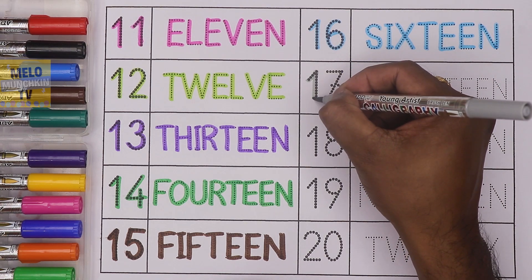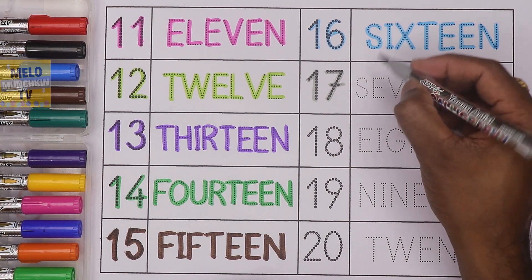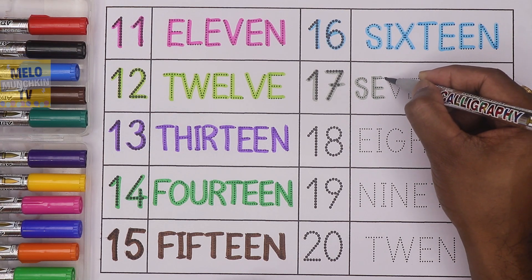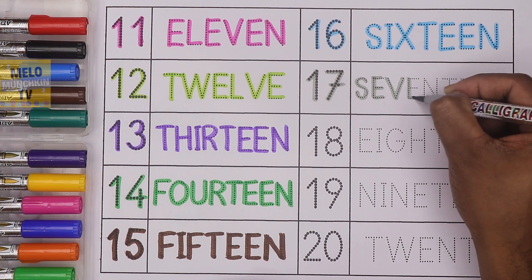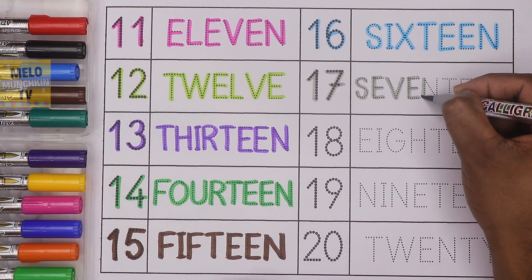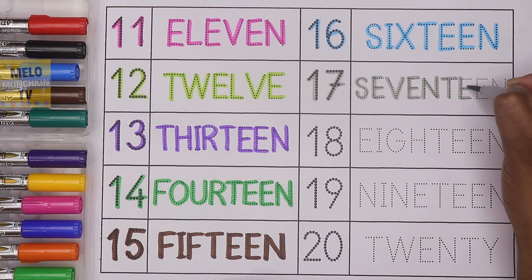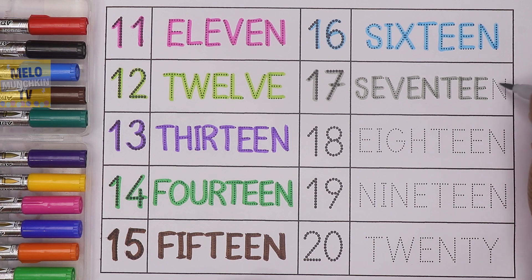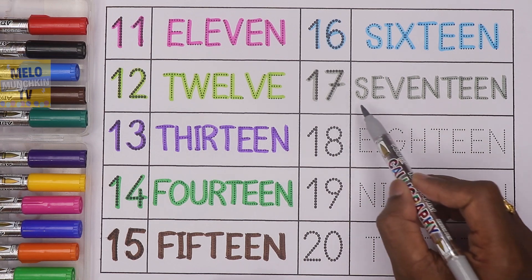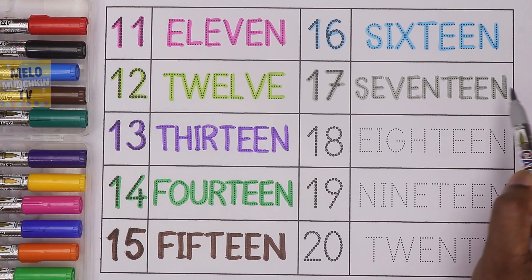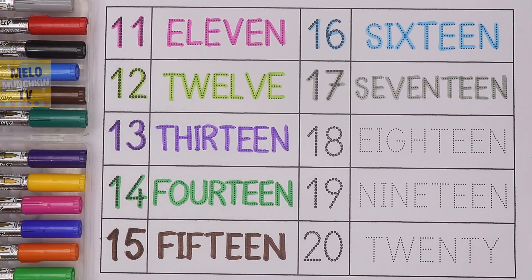This is green color to write 17. 17. And the spelling is S E V E N T E E N. 17, 1, 7, 17. S E V E N T E E N, 17.